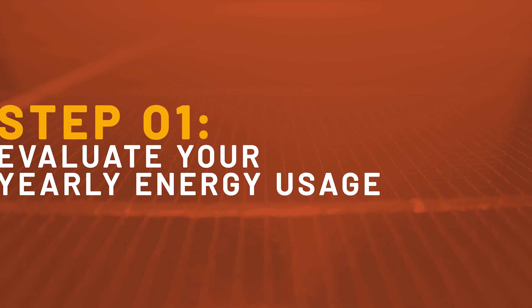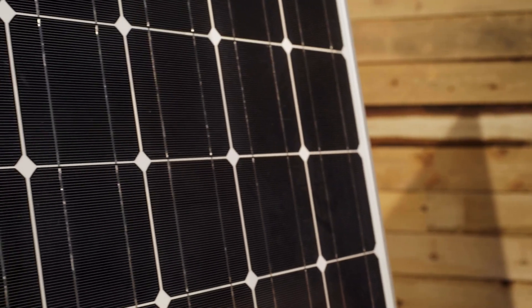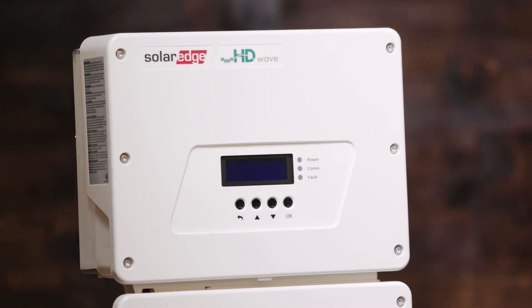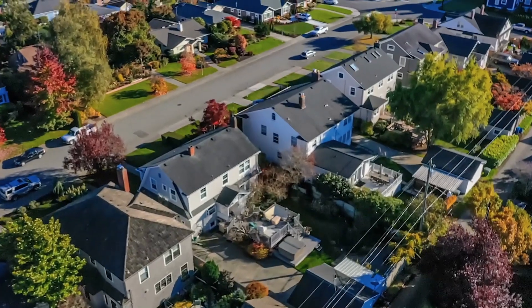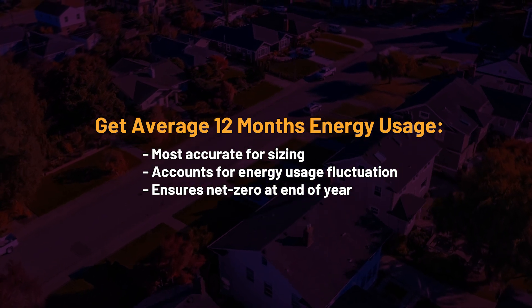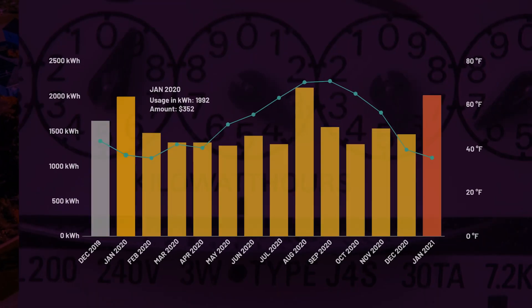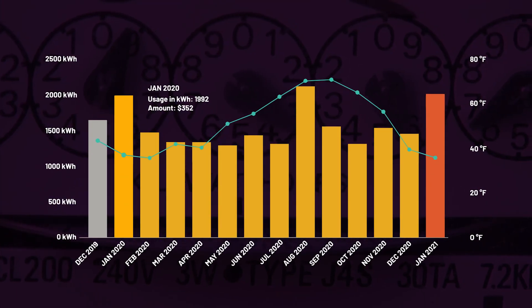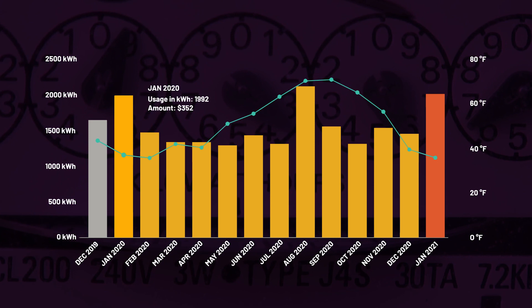Step one: evaluate your energy usage. The key to success with solar is making sure your system is designed around your personal power needs. So before getting into components or system types, we always recommend that you start by gathering and analyzing at least 12 months worth of your energy usage data. Having 12 months of energy usage information for a typical year is the quickest and most accurate way to help you design your system.